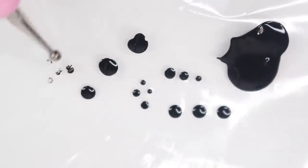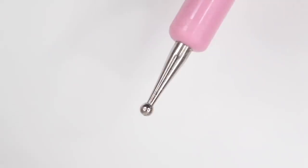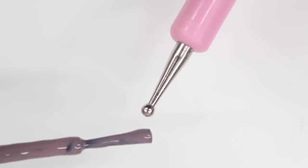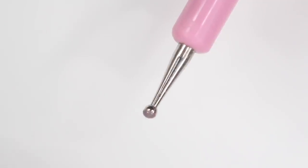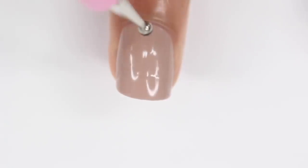You also want to make sure at least the top half of the ball on your dotting tool is covered because if not you're just going to get marks instead of a full circle. If your nail design only needs one or two dots then you have the option of taking the nail polish brush and painting directly onto the dotting tool. So let's get into an actual nail example.